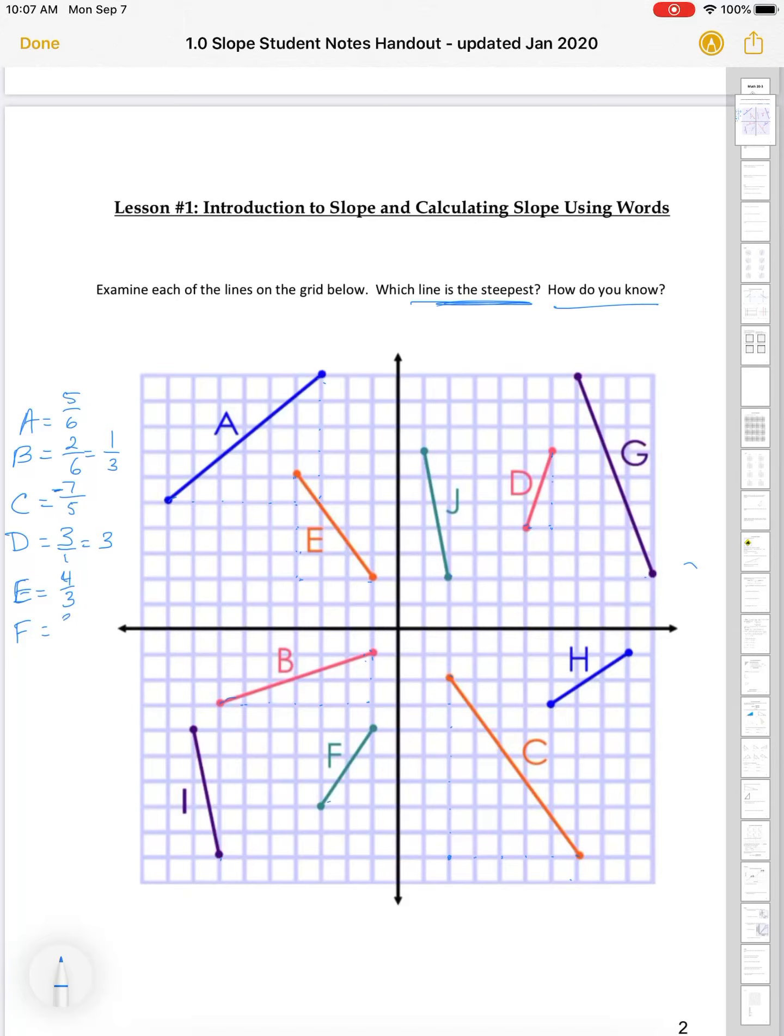F. F goes up 3 and over 2. And already, looking at these, I can cross some of them out in terms of what is the steepest. Because, so far, 5 over 6 is less than 3, so it's not A. 1 over 3 is much less than 3, so it's not B. 7 over 5, well, 5 goes into 7 once with 2 left over, so it is much less than 3.